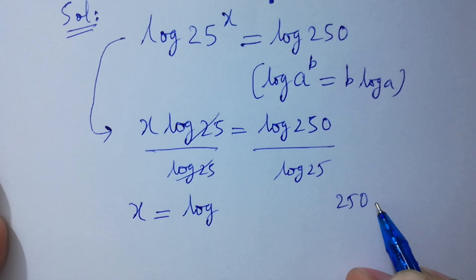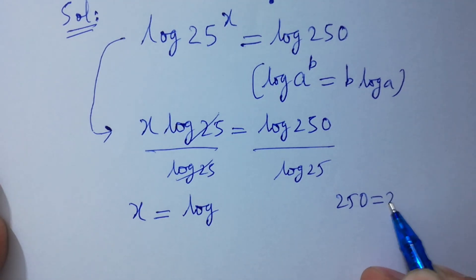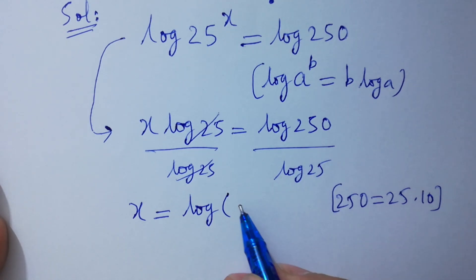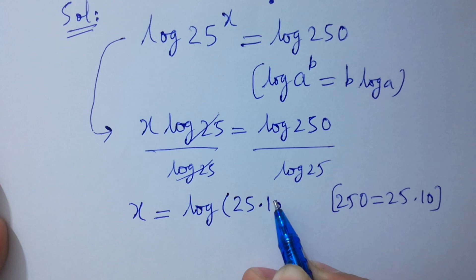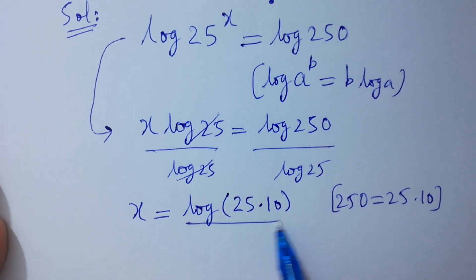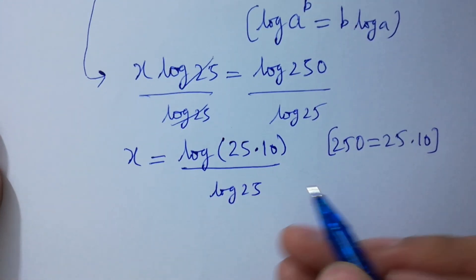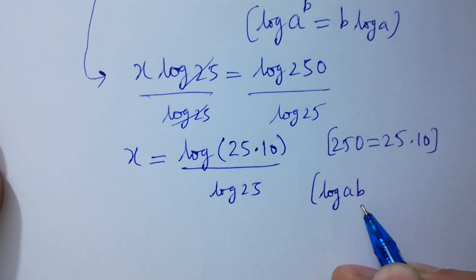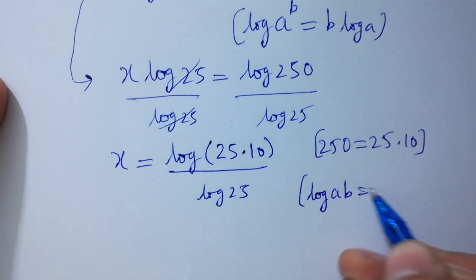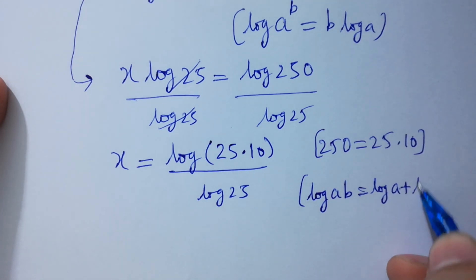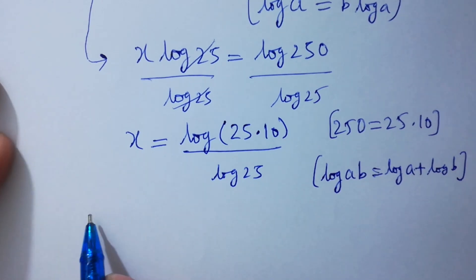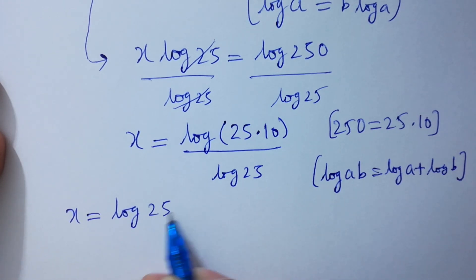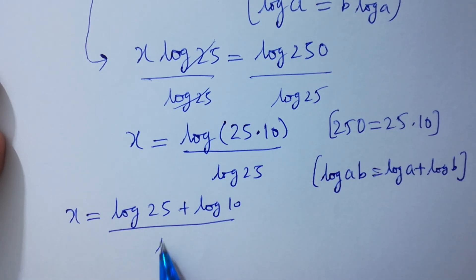Now, 250 equals 25 times 10. So log 250 equals log of 25 times 10, over log 25. Since log ab equals log a plus log b, so x equals log 25 plus log 10, over log 25.